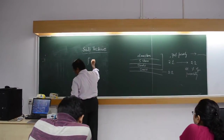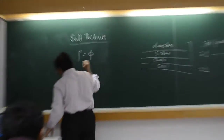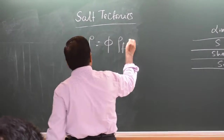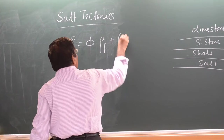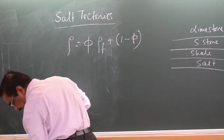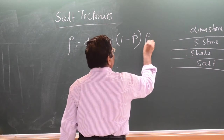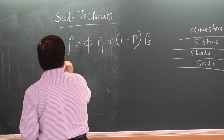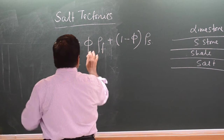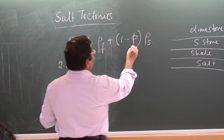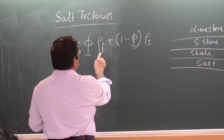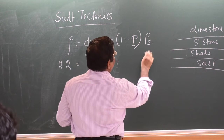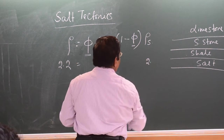So, rho is equal to phi into rho_f plus (1 minus phi) into rho_s. This is the equation. Now, you have to make this as 2.2. The porosity is the final porosity.